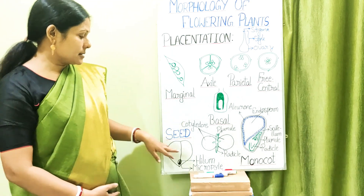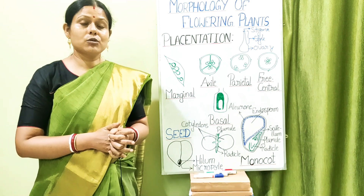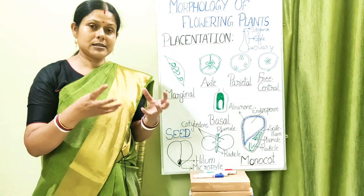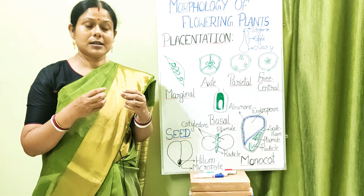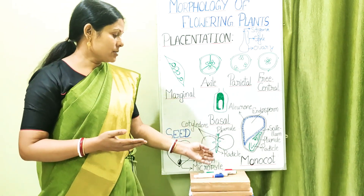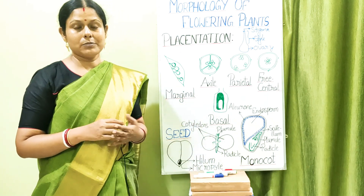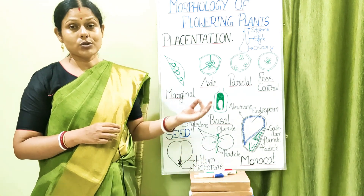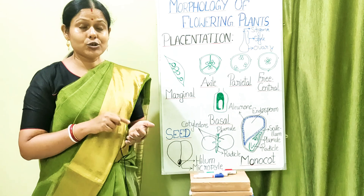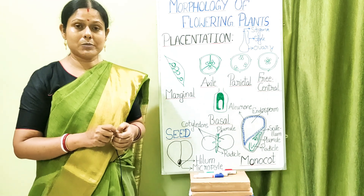The seed is covered by a protective seed coat divided into the outer testa and inner tegmen. When soaked in water, the testa absorbs water, softens, and the dormant embryo germinates. The embryo is attached to the cotyledons by the embryonal axis, which has an upper plumule — the future shoot — and a lower radicle — the future root. Mature dicot seeds are mostly non-endospermic, with the exception of castor seeds, which are endospermic.